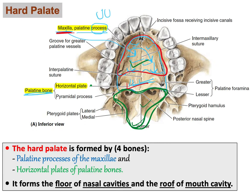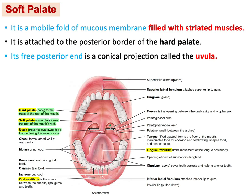The soft palate is attached to the posterior part of the hard palate. It is made of striated muscles covered by mucous membrane on both sides — upper and lower surfaces. It has a small clinical projection known as the uvula, which is also muscle covered by mucous membrane as it is part of the soft palate.